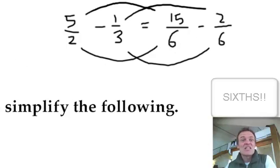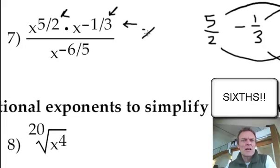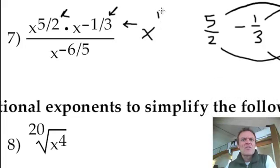The answer is 13 sixths. So right now, on the top, I've got x to the 13 over 6. 13 over 6, is that right? 15 take away 2, there,